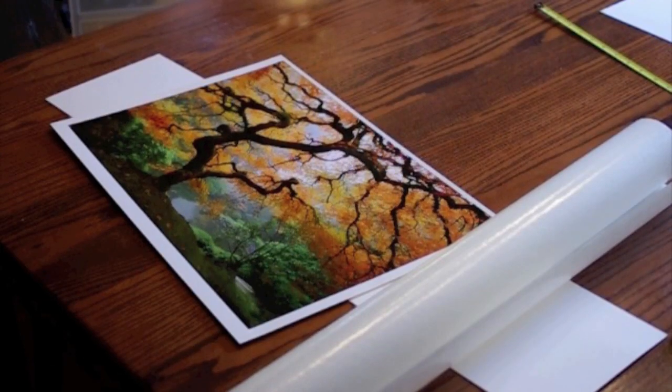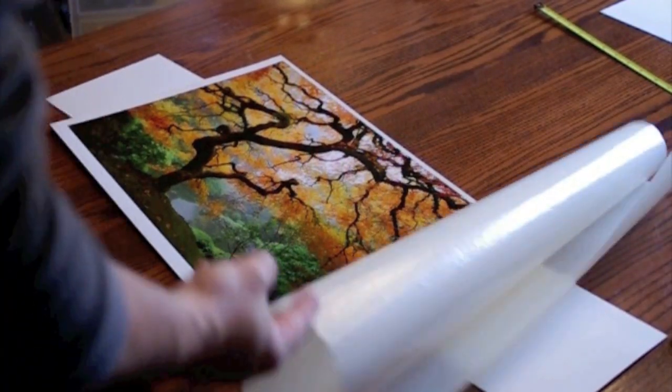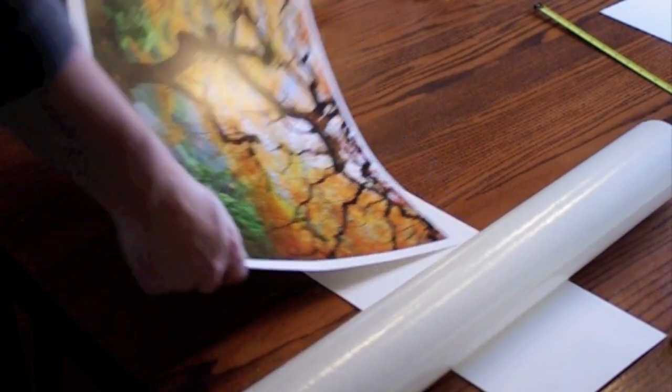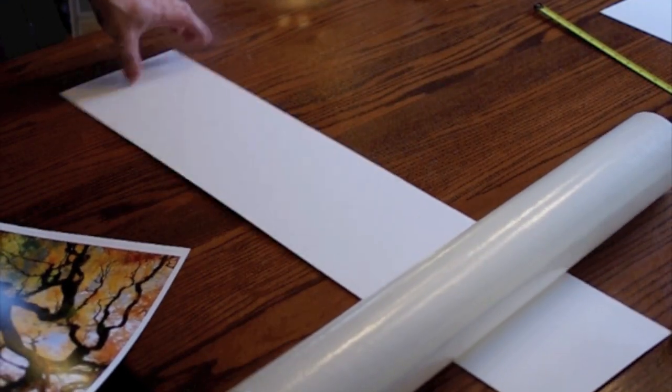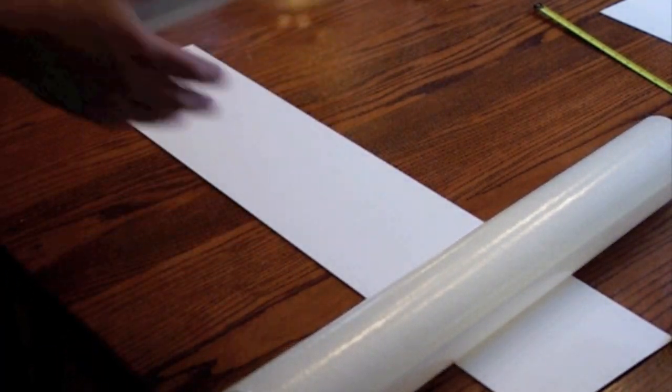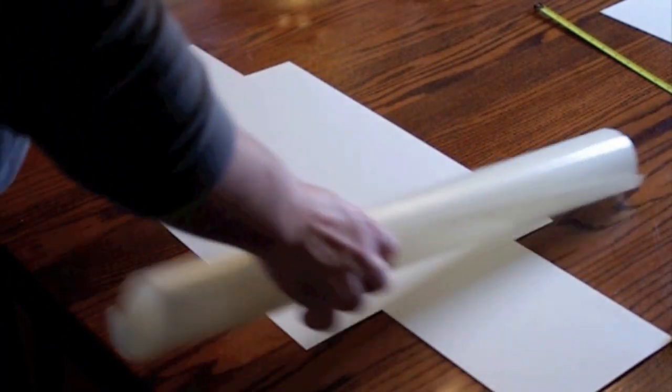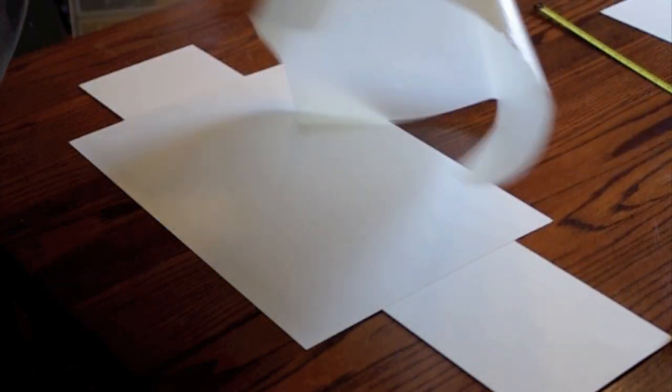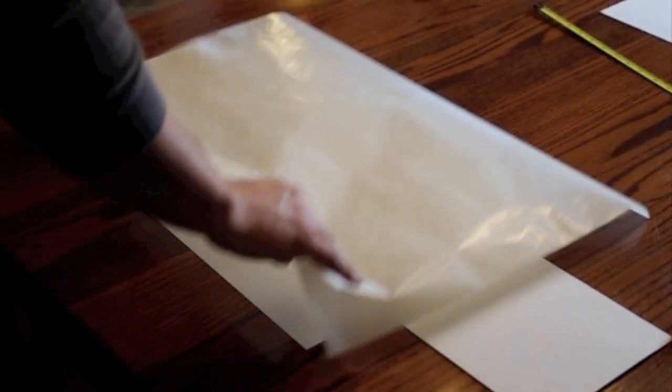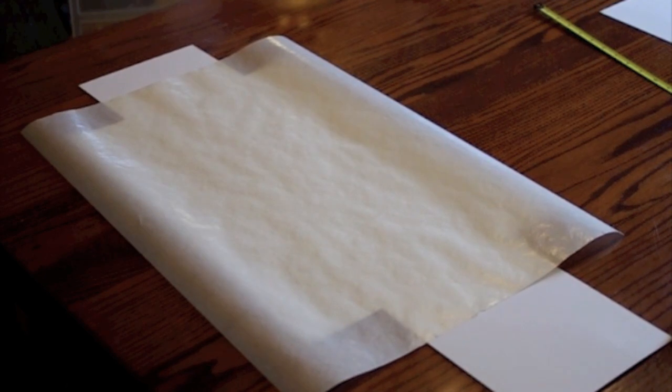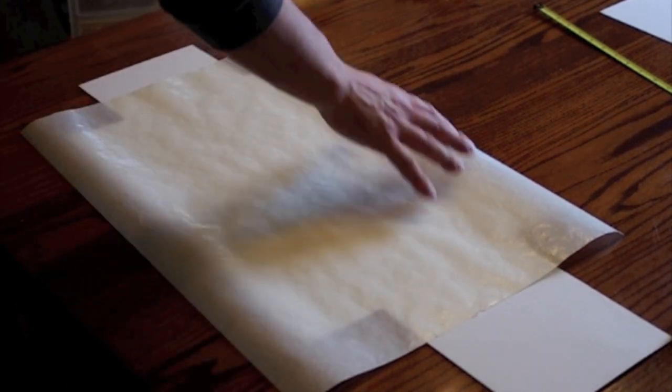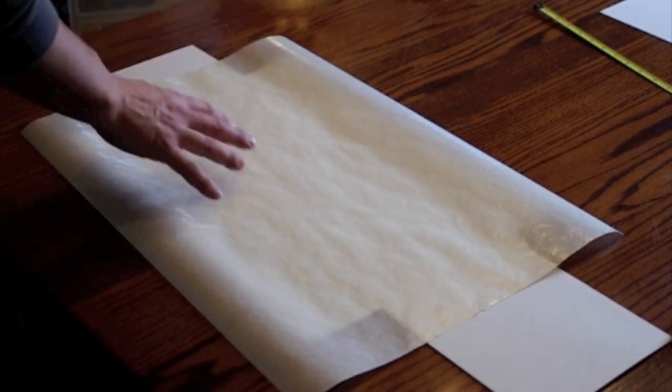Okay. We've got our dry-mount tissue here, and we've got our print. And here's a backing board so we won't burn our table. So, we turn our print over, and we put our dry-mount tissue on top of there like so. The dry-mount tissue, the only thing that's important here is that dry-mount tissue is definitely bigger than the print. And you'll see why in a minute.